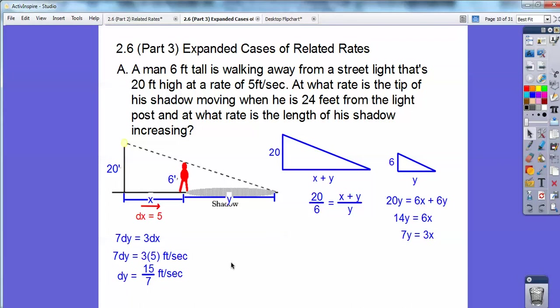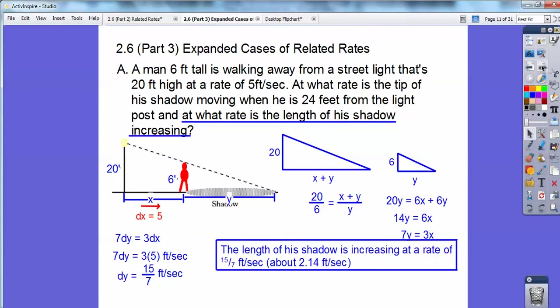I get DY to be 15 sevenths feet per second, which is like 2.14 something. So there's the second part of the answer right there. The length of the shadow is increasing at a rate of 15 sevenths feet per second, about 2.14 feet per second.